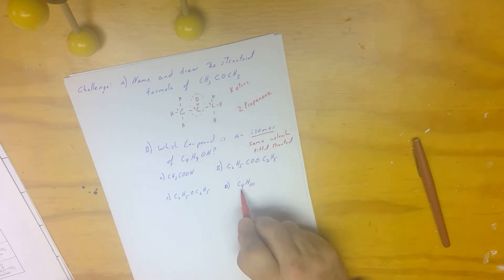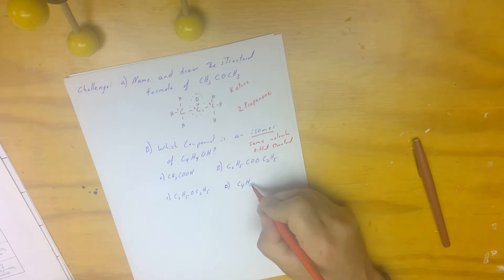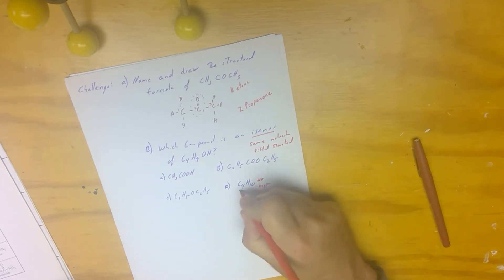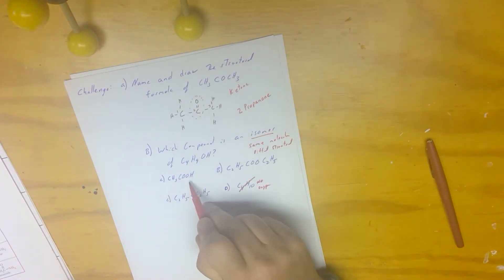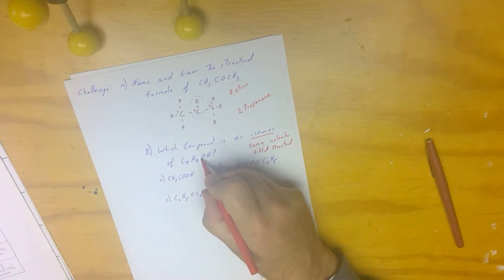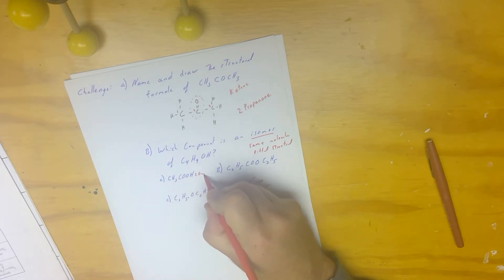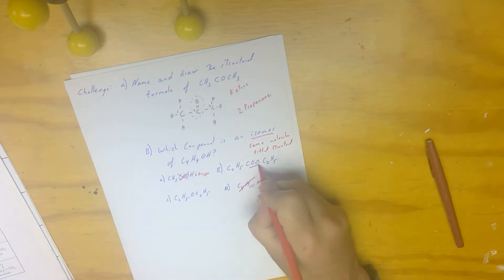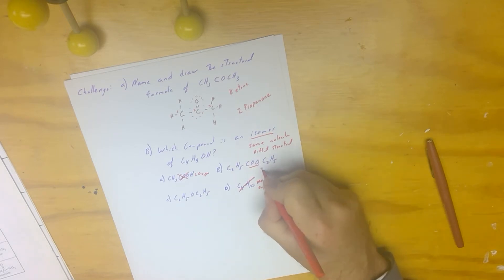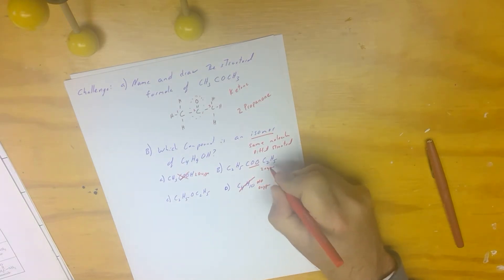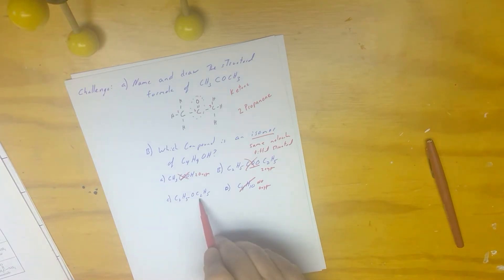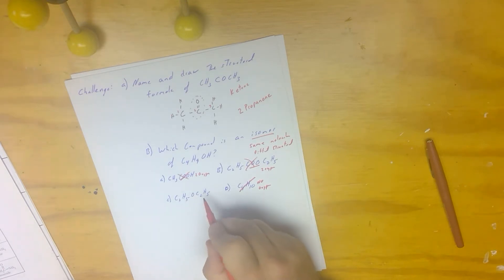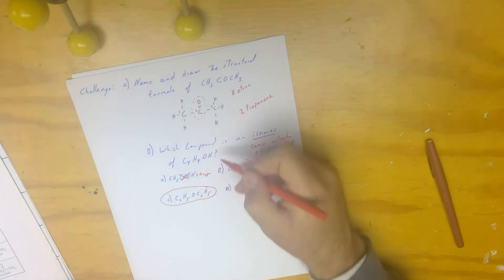Can it be this one? Well, this one has one oxygen but another option has two oxygens — so it can't be that one. Same thing with the next — it can't be that one because it has two oxygens. So it must be this one. Does it have four carbons? One, two, three, four — yes. Does it have ten hydrogens? Five here, five here — yes. And does it have one oxygen? Yes. So this is an isomer.